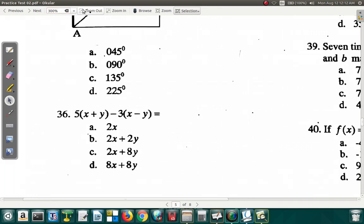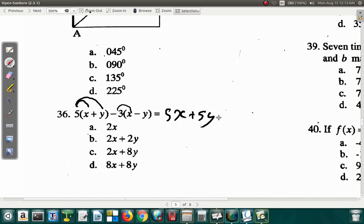We can zoom in a bit. Now, it says 5x plus y minus 3x minus y. We're going to multiply the brackets. 5 times x is 5x, plus 5 times y, that's 5y. Negative 3 times x is negative 3x, and then minus 3 times minus y, negative 3 times negative y, that's positive 3y.